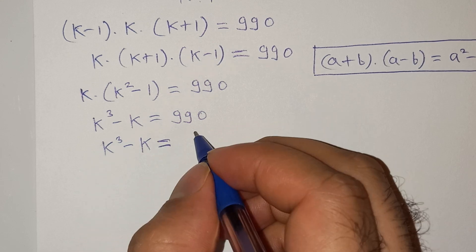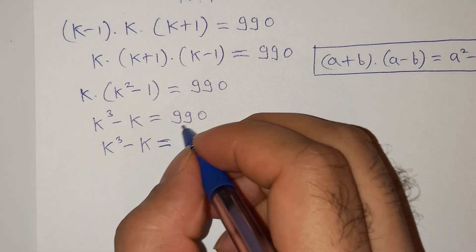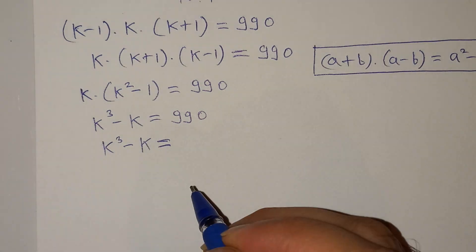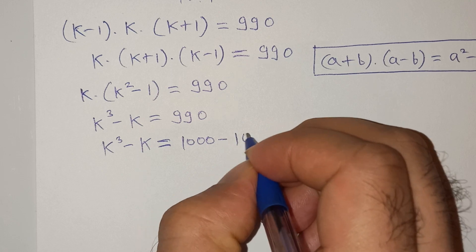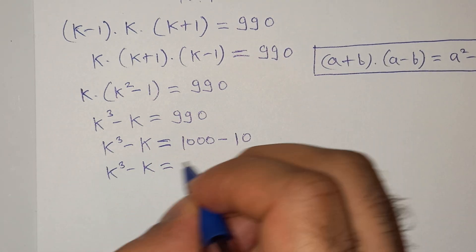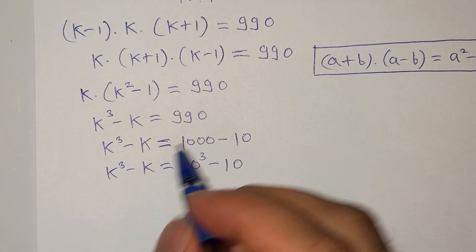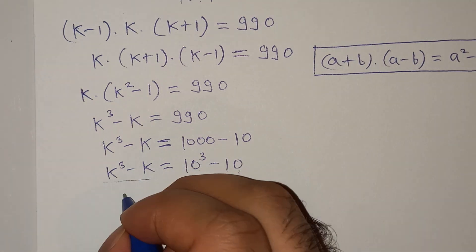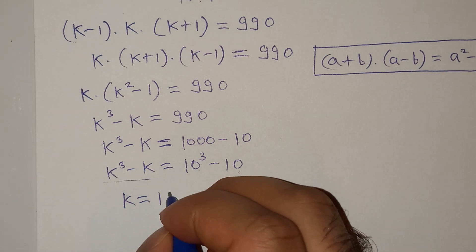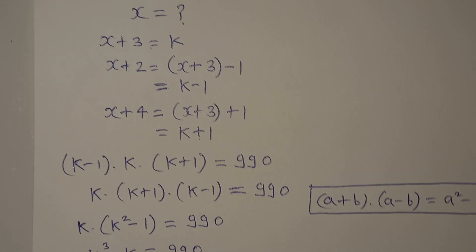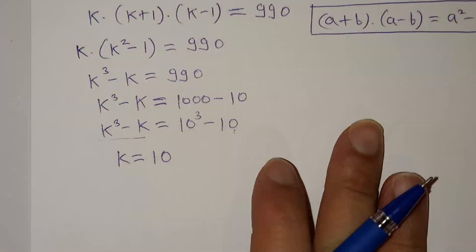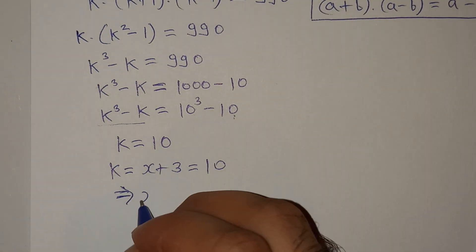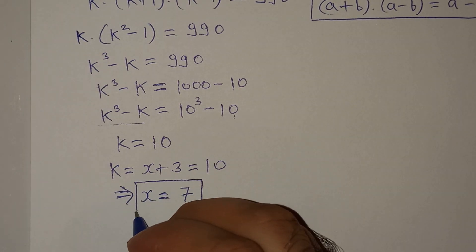Now there are two ways to solve this — a short way and a long way. I'll solve through the short way first. We need to write 990 in the form of k cubed minus k. So 990 equals 1000 minus 10, which is 10 cubed minus 10. Since the left-hand side expression k cubed minus k matches the right-hand side 10 cubed minus 10, the value of k is 10. Since k equals x+3, we have x+3 equals 10, so x equals 7. That is our final answer.